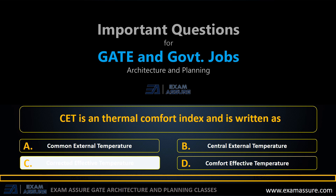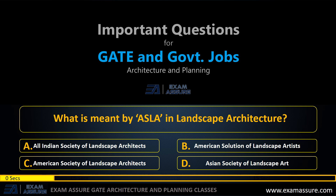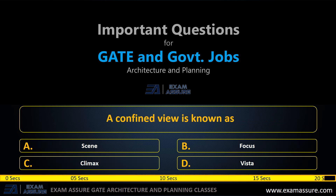Next question: What is meant by ASLA in landscape architecture? Option A: All India Society of Landscape Architects, option B: American Solution of Landscape Artists, option C: American Society of Landscape Architects, option D: Asian Society of Landscape Art. The correct answer is option C, American Society of Landscape Architects.